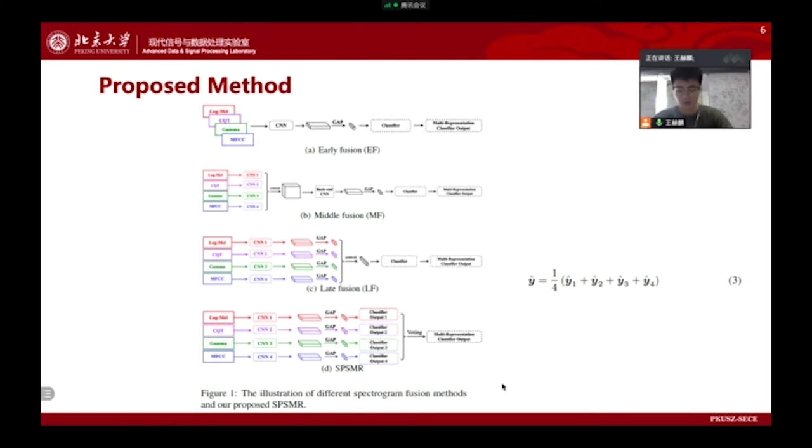In order to overcome the above problems and make better use of the representations, we propose a novel spectrogram processing strategy in multiple representations called SPSMR, which trains several independent CNN models based on different representations and then combines them by the decision-level fusion. As shown in Figure 1D, the predicted scores of the four models are averaged to obtain the final predicted score, which is also known as the average voting strategy.